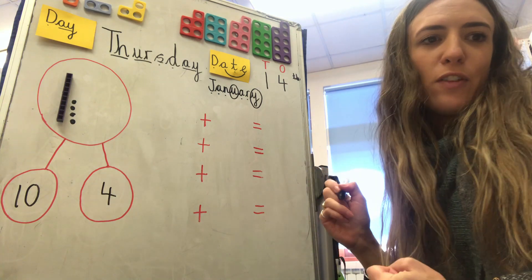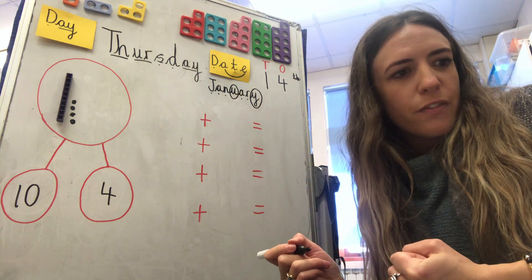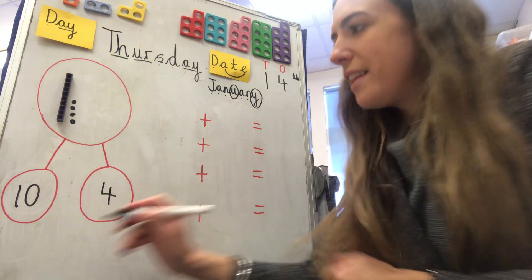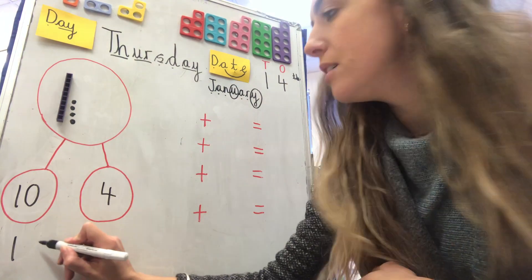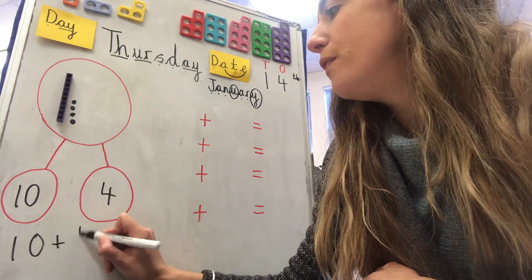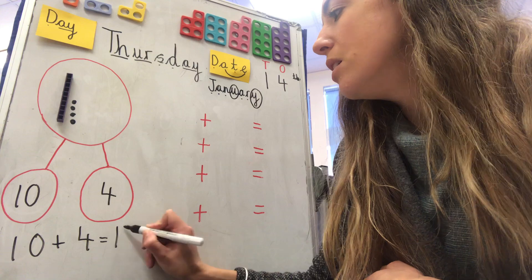How else could we do it? Can we think of lots of different ways? Can we make lots of different number sentences? You could write that one. Ten, add four, equals fourteen.